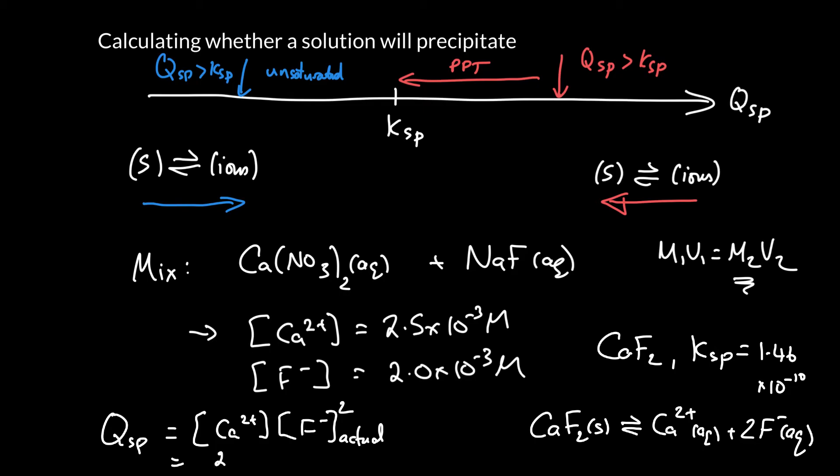We're given them in the problem above. So it's 2.5 times 10 to the minus 3. Remember, for these equilibrium constants and reaction quotients, we don't put the units in. It's just a raw number. Fluoride is 2 times 10 to the minus 3. But we've got to square it. We multiply that together. We get 1.0 times 10 to the minus 8.